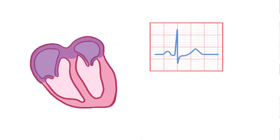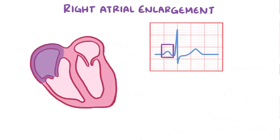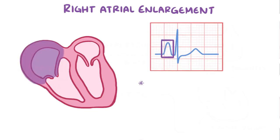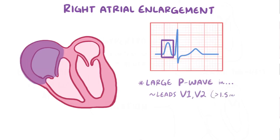An ECG can show evidence of hypertrophy and enlargement in all the heart's four chambers, so let's go through them one by one. Normally atrial depolarization produces a pretty normal-looking, symmetric P wave. In right atrial enlargement, all that extra right atrial muscle tissue results in a large P wave in leads V1 and V2, often over 1.5 mm, as well as in the inferior leads — leads 2, 3, and AVF — often over 2.5 mm.